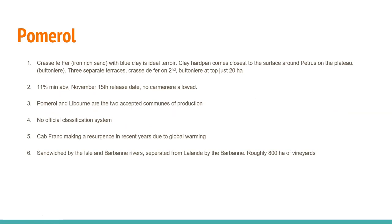Pomerol — important to note the crasse de fer, or iron-rich sand with blue clay, is ideal here. The clay hard pan comes closest to the surface right around Petrus, which sits on the plateau, otherwise known as the boutonnière. There are three separate terraces, with the crasse de fer on the second and the boutonnière at the top — just 20 hectares. Minimum ABV is 11% with a later release date of November 15th. No Carmenère is allowed. Pomerol and Libourne are the two accepted communes of production, with no official classification system. About 800 hectares of vineyards, sandwiched by the Isle and Barbonne rivers, separated from Lalande to the north by the Barbonne River.